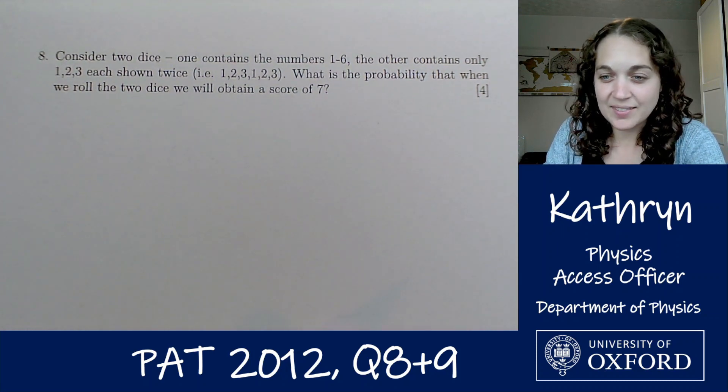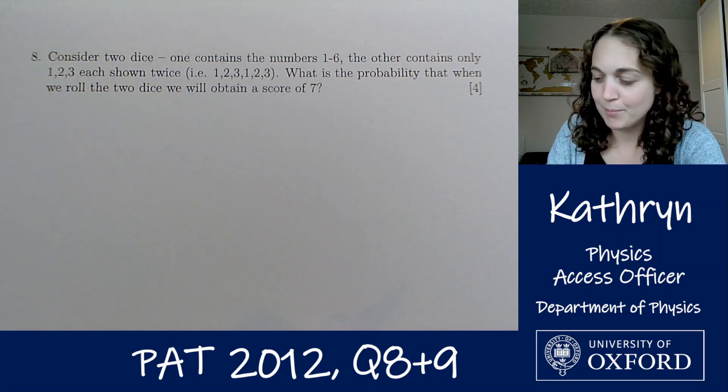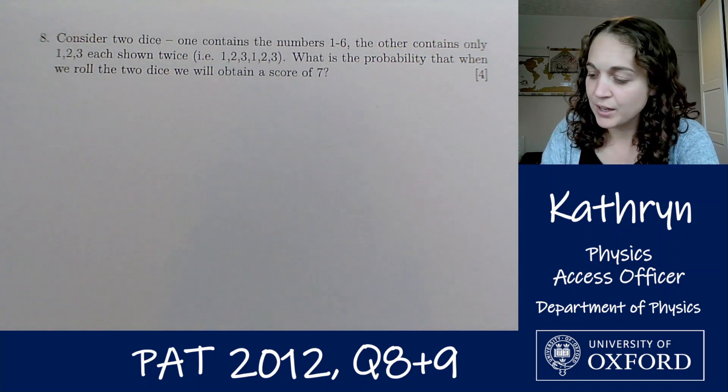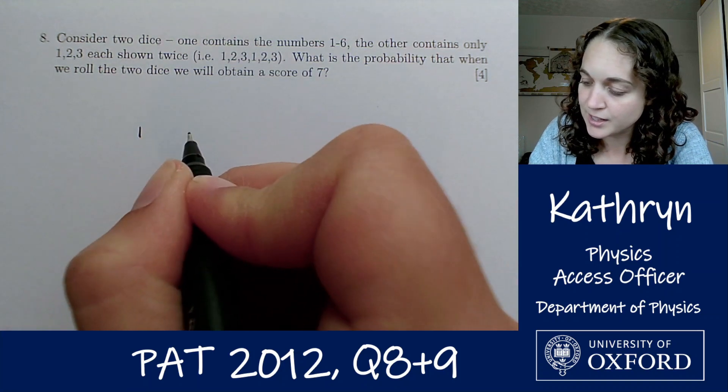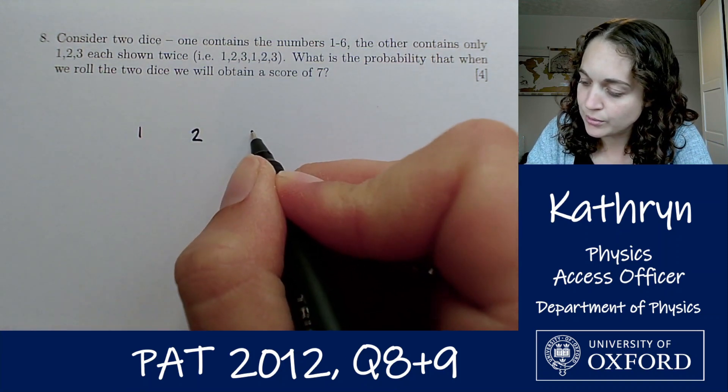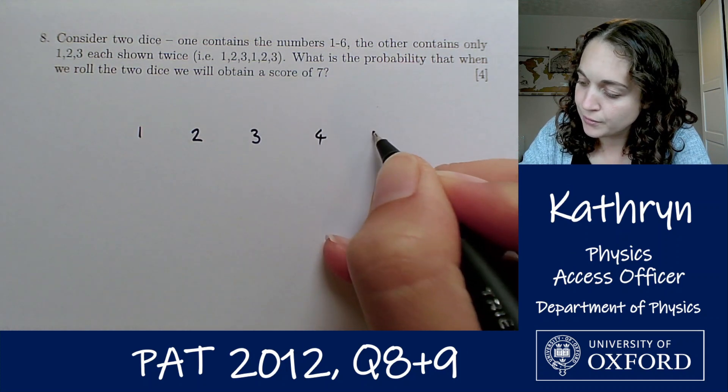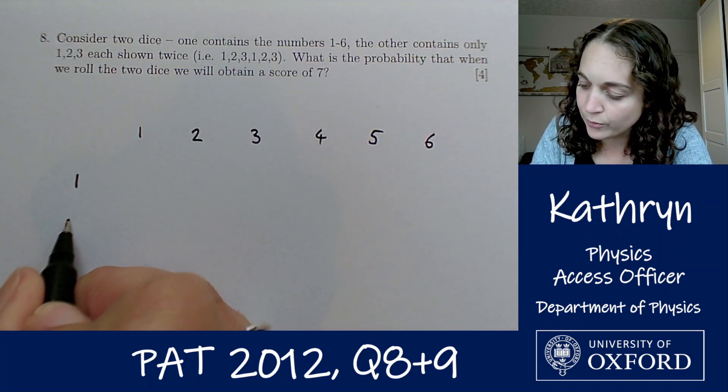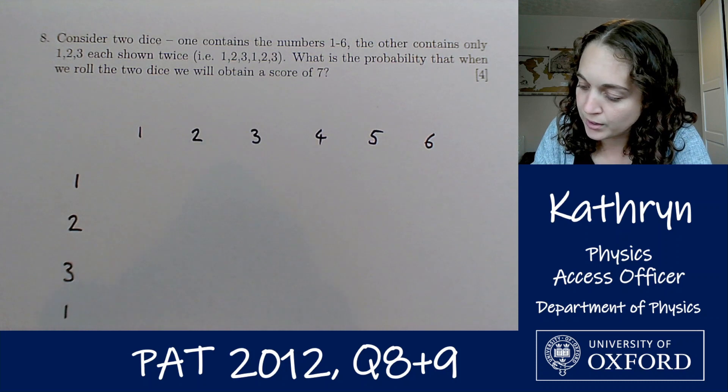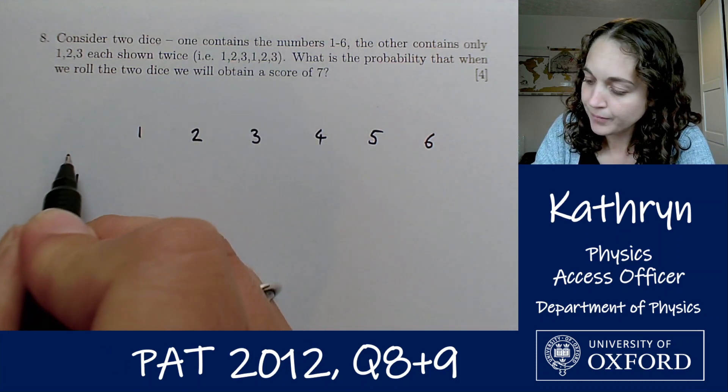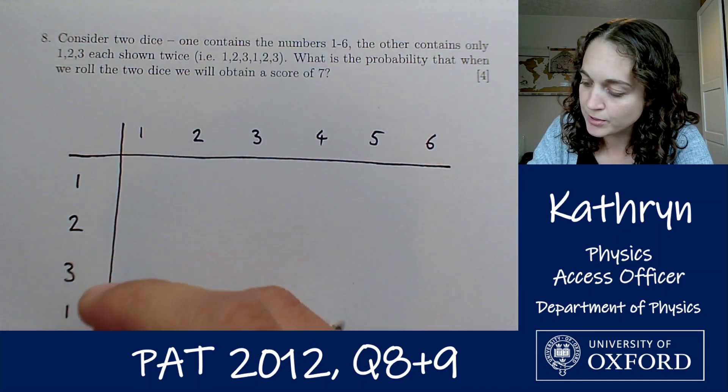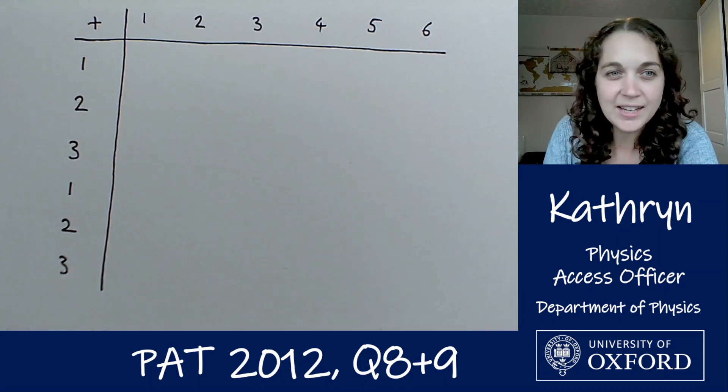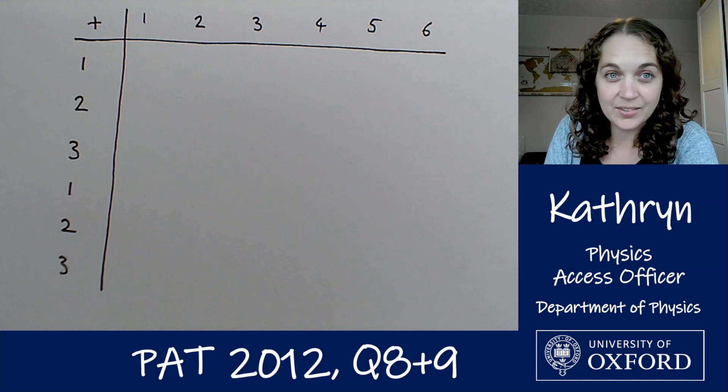Okay, so we add up one number from our normal dice 1 to 6 and one number from our special dice 1, 2, 3, and how often do we get a 7? One of the simplest ways to do this is to set out what's called a sample space diagram, which sounds a lot more complicated than it is. All it really is, is writing down all of our possible options.